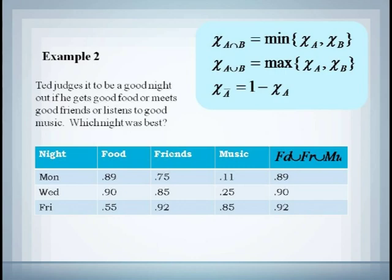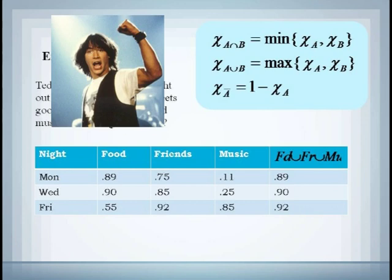If Ted's membership in these three sets is given for a particular Monday, Wednesday, and Friday night, on which night did Ted have the best time? Since Union just corresponds to a maximum value, it's easy to see that our fuzzy union is just the maximum value in each row, and the largest of these is 0.92, which occurs on Friday night.